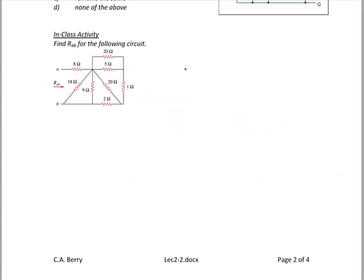Now let's find the equivalent resistance of a more complicated network. We want to find RAB, the equivalent resistance seen from terminals A and B. The strategy is to work from the outside in — in this case from the right toward A and B. We find two sets of resistors in parallel: the 20 ohm and 5 ohm resistors at the top, and the 18 ohm and 9 ohm resistors at the bottom.